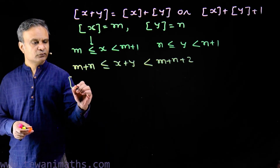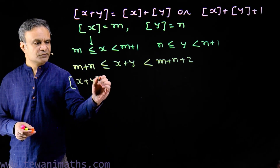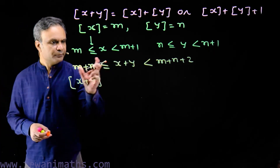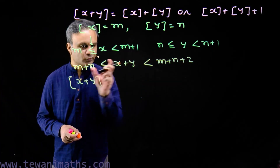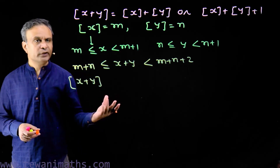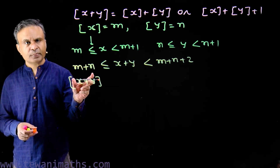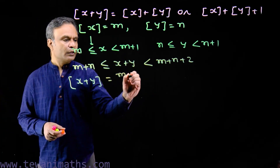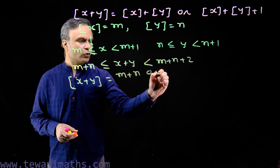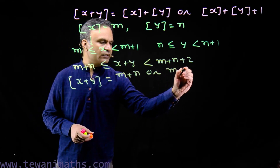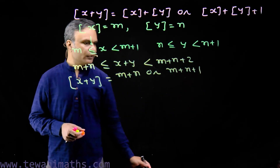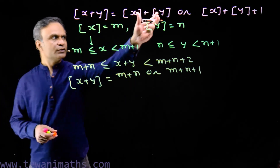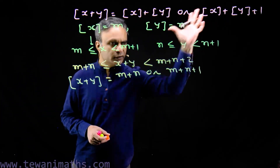Then what will be the value of the greatest integer of x plus y? In this interval, m plus n to m plus n plus 2 including m plus n, we find two integral values: m plus n and m plus n plus 1. So this will be either m plus n or m plus n plus 1. Now put the values of m and n — we get this is equal to this or this.